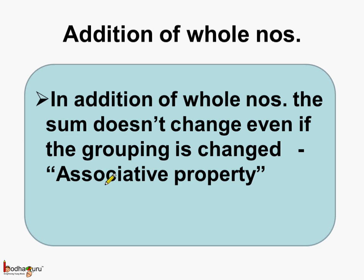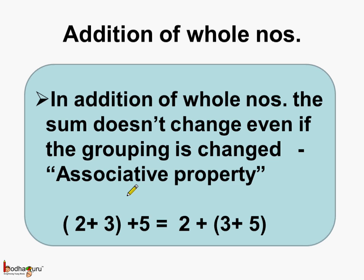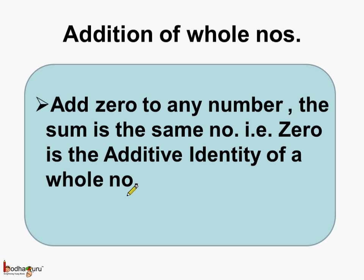Next, we saw the associative property: while adding whole numbers three or more in number, the sum doesn't change even if the grouping is changed. For example, adding two plus three first then adding five, or adding three plus five first then adding two — in all cases the answer is the same, which is ten. The last property is the additive identity: if we add zero to any number, the sum is the same number. Zero is called the additive identity of a whole number.